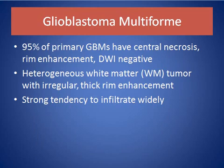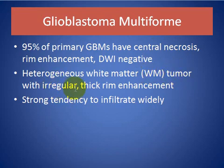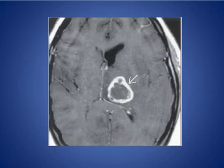Glioblastoma multiforme: 95% of primary glioblastoma multiforme has central necrosis, rim enhancement, and diffusion-weighted images are negative. Heterogeneous white matter tumor with irregular thick enhancing wall and a strong tendency to infiltrate widely.